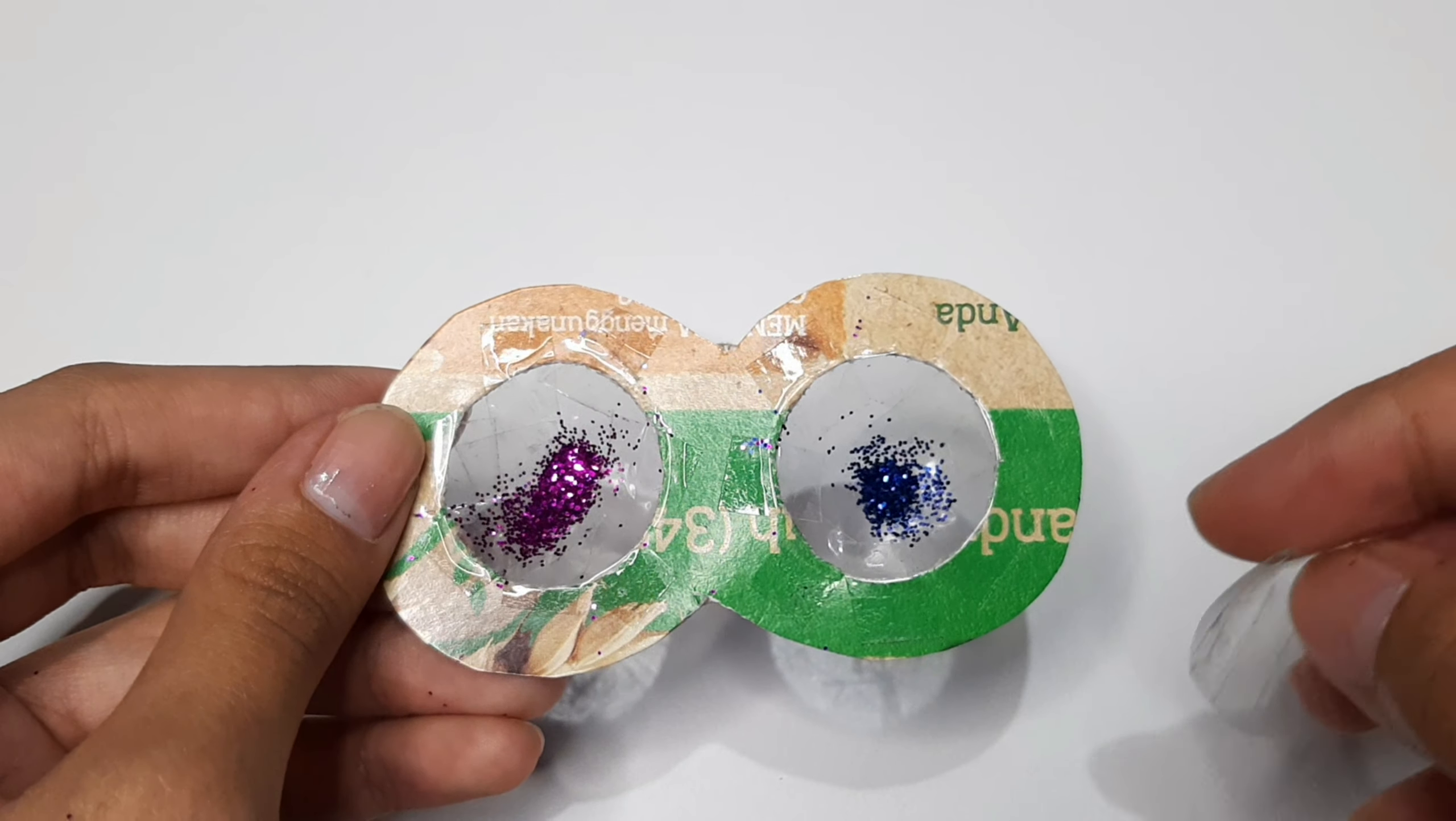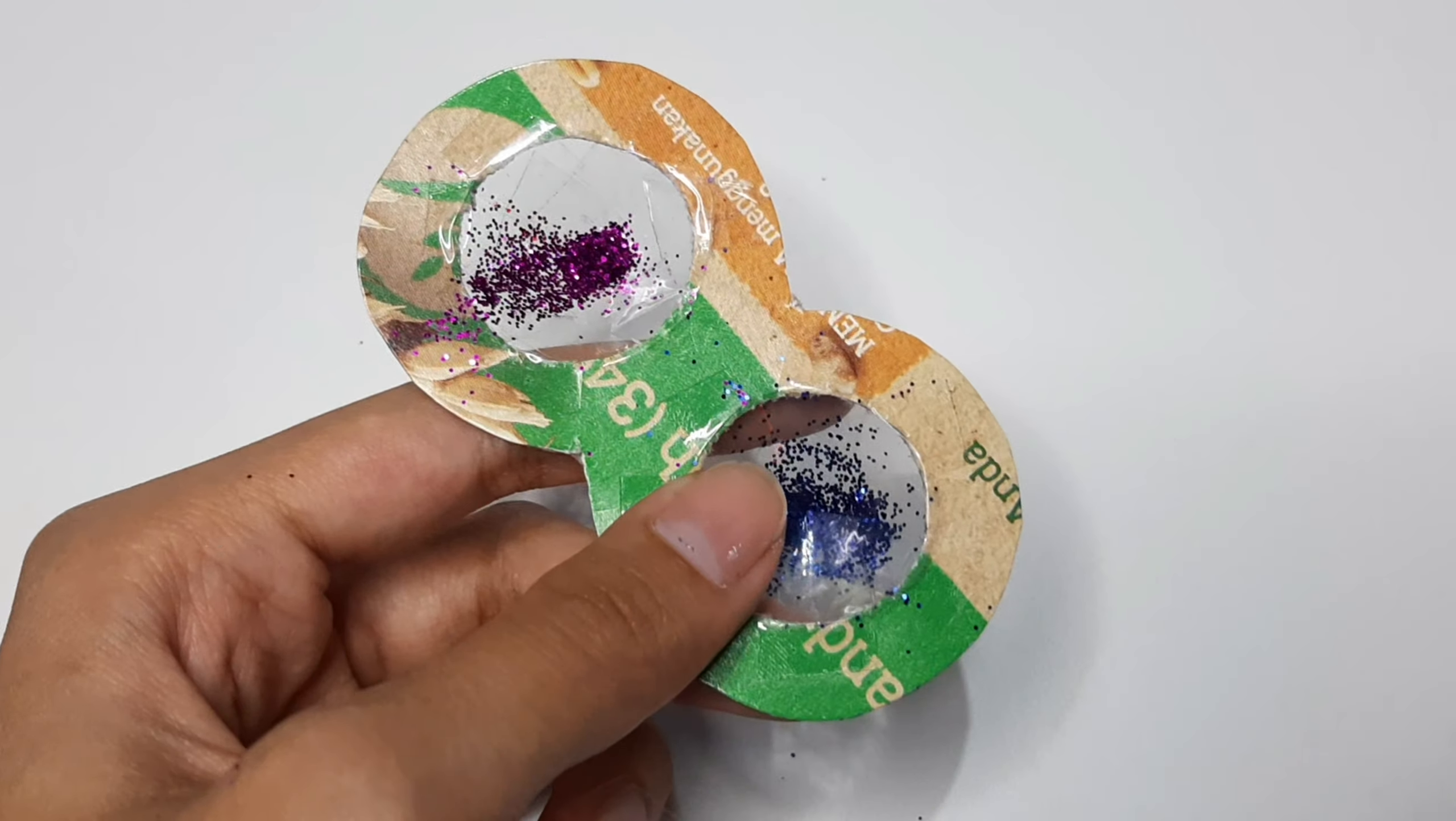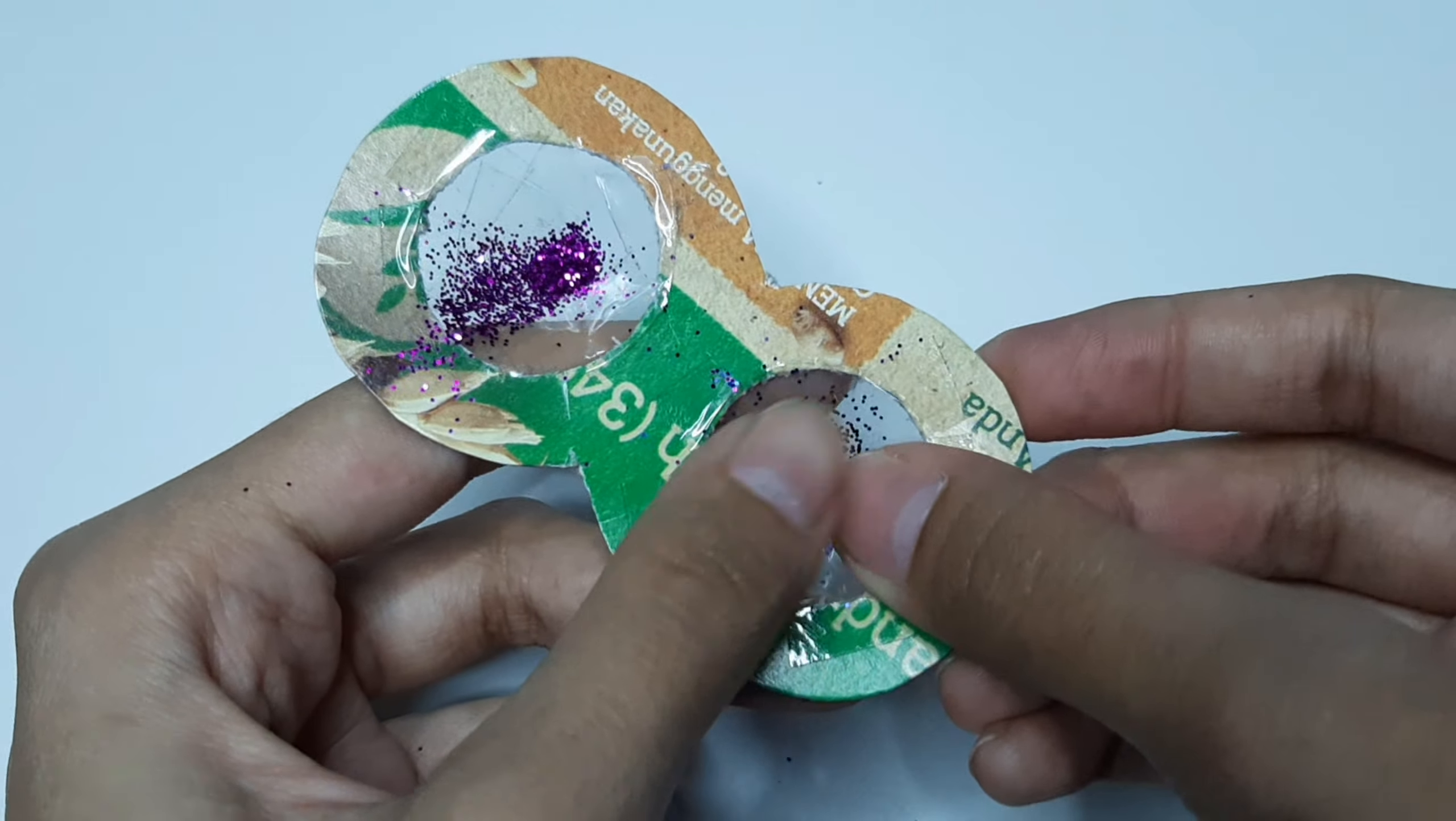Then cover the plastic using plastic again and use the tape. Make sure everything is tightly covered so the glitters don't leak out.